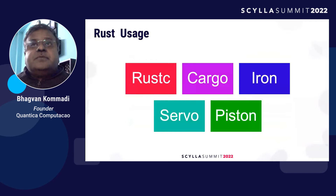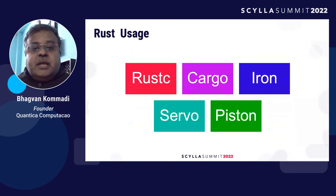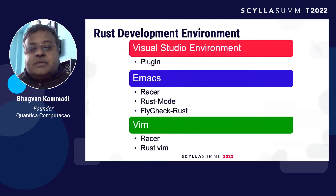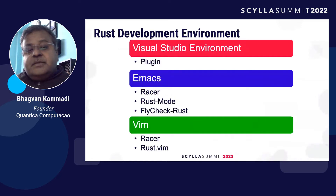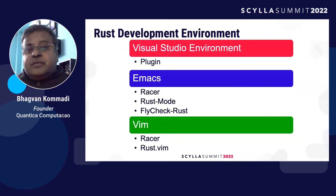The next question is: how do you go about using Rust? You have a compiler called rustc and you have Cargo, which is a package manager. You have Iron and Servo, which is a browser, and you have Pistol. For development environments, you can use Visual Studio with a Rust plugin, Emacs with flycheck for Rust, Rust mode, or Racer, or Vim with Racer and rust.vim.